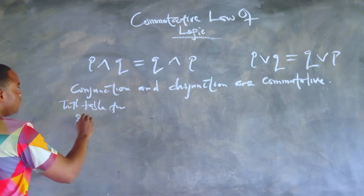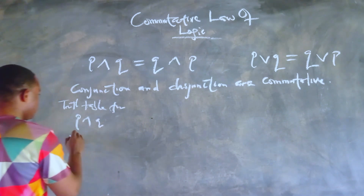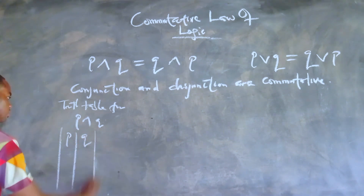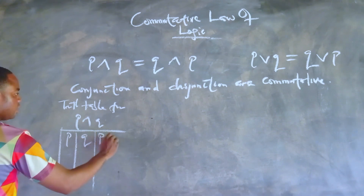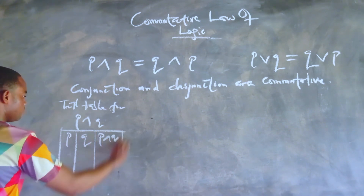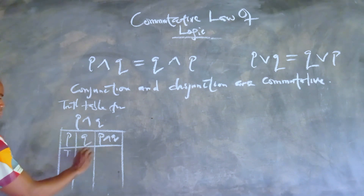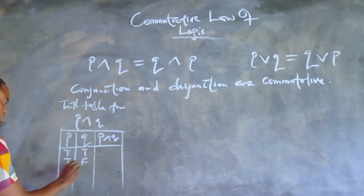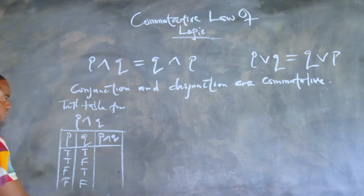Let's go on and draw the truth table for each of these compound statements and compare the truth values on the truth table. So the first one is P and Q. The four possible conditions are: true/true, true/false, false/true, and false/false as the truth values for P and Q respectively.